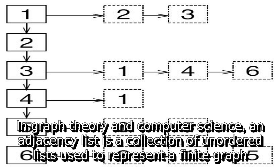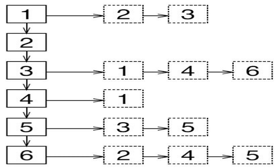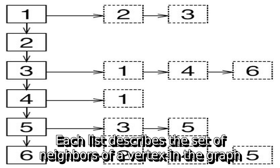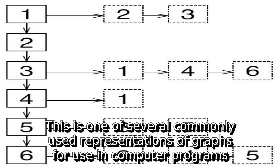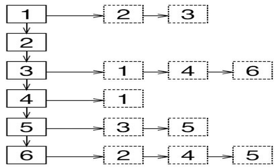In graph theory and computer science, an adjacency list is a collection of unordered lists used to represent a finite graph. Each list describes the set of neighbors of a vertex in the graph. This is one of several commonly used representations of graphs for use in computer programs.